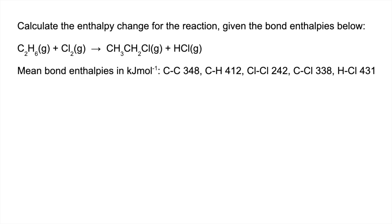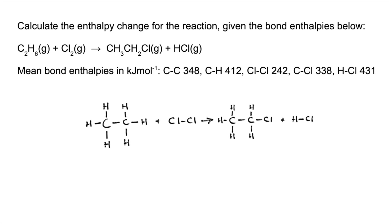The first thing I would advise is to draw the equation out in displayed formulas so we can actually see the bonds being broken and formed. Then we work out the energy to break all the bonds in the reactant — the E in value. We've got 348 for 1 mole of C-C bonds, 412 times 6 for 6 moles of C-H bonds, and 242 for 1 mole of C-Cl bonds. That gives us a total of 3062 kilojoules per mole.